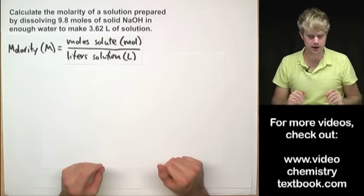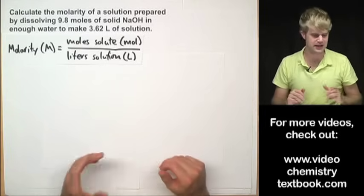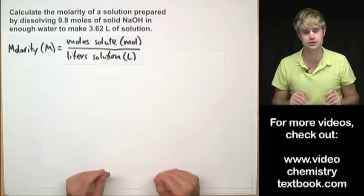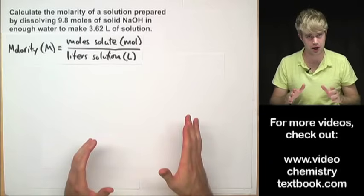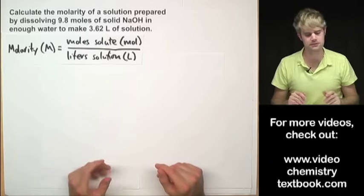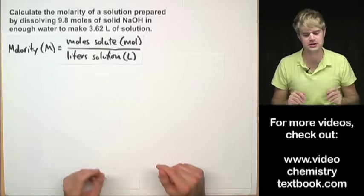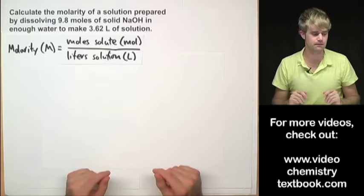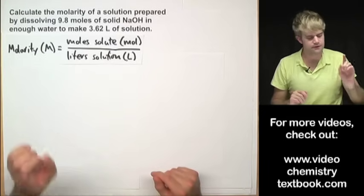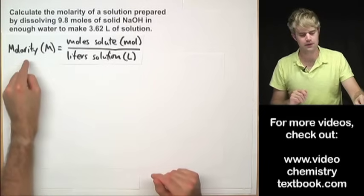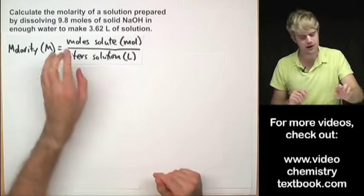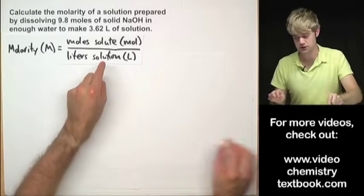Calculate the molarity of a solution prepared by dissolving 9.8 moles of solid NaOH (sodium hydroxide) in enough water to make 3.62 liters of solution. To find molarity, you take moles of solute and divide it by liters of solution.